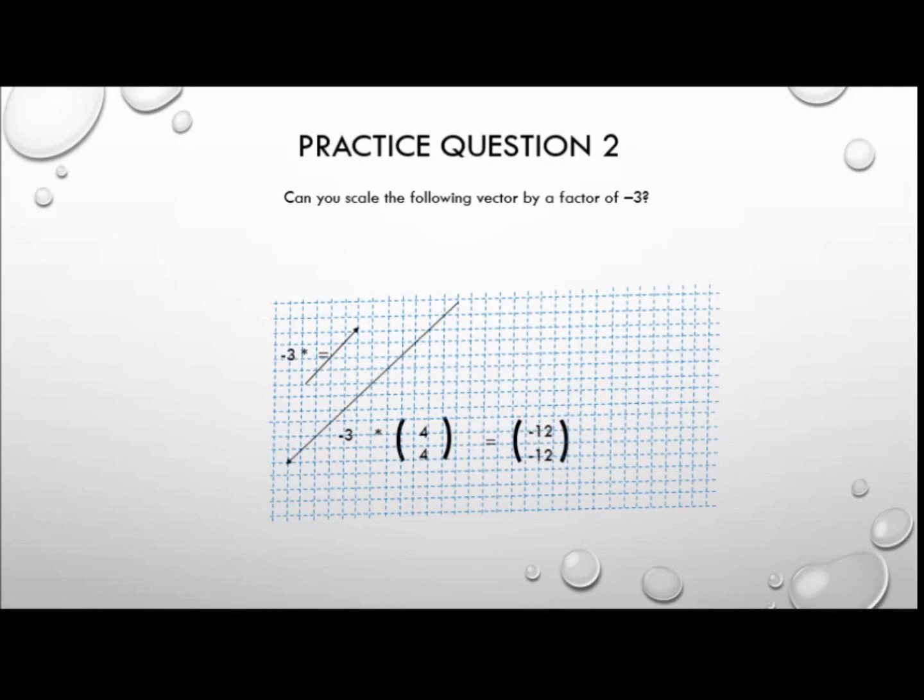Okay how did you get on with that one? So if we're multiplying a vector by negative three the arrow will be three times the size but pointing in the opposite direction. And in component form we could say that negative three times vector (4, 4) is equal to (-12, -12).